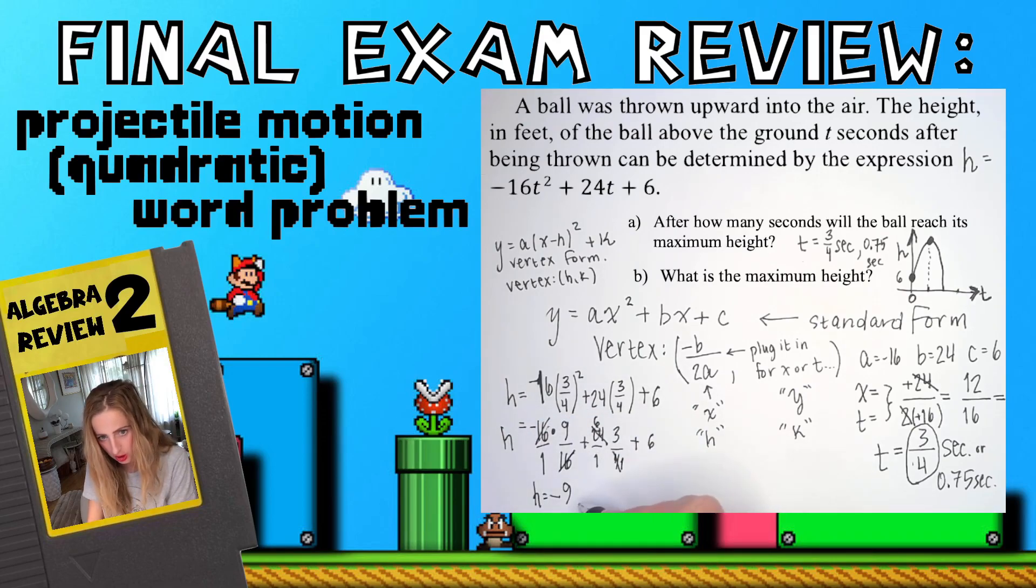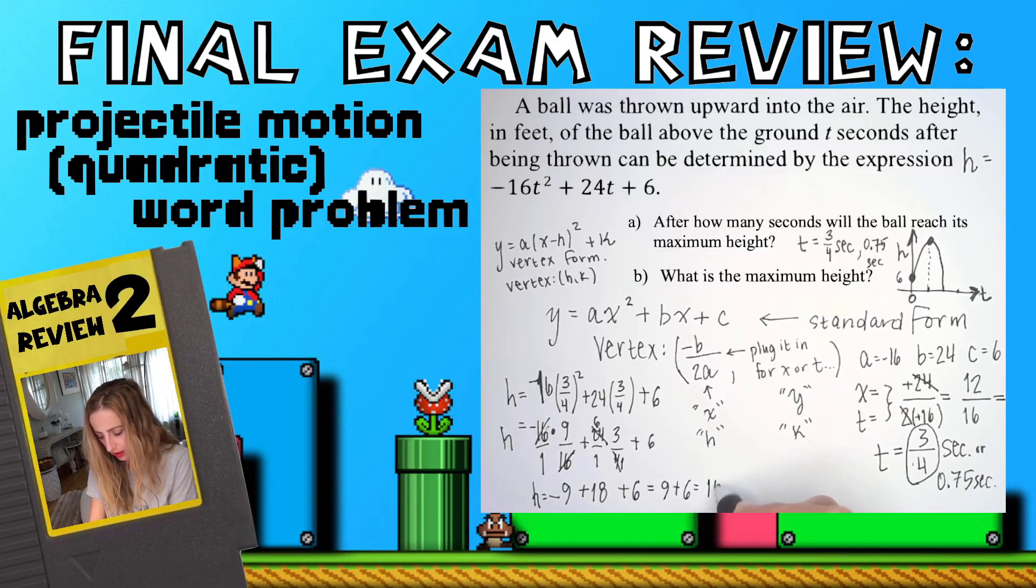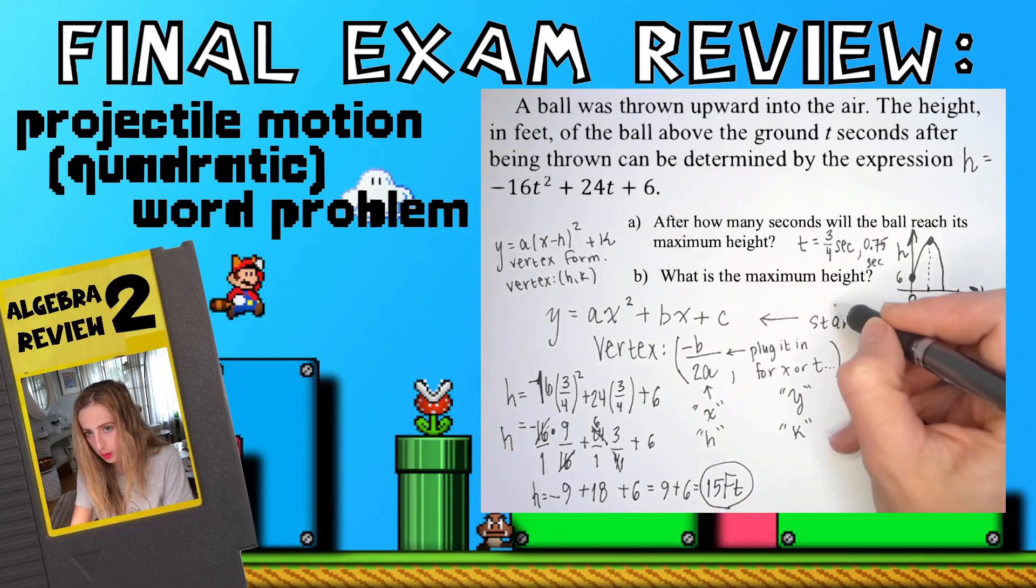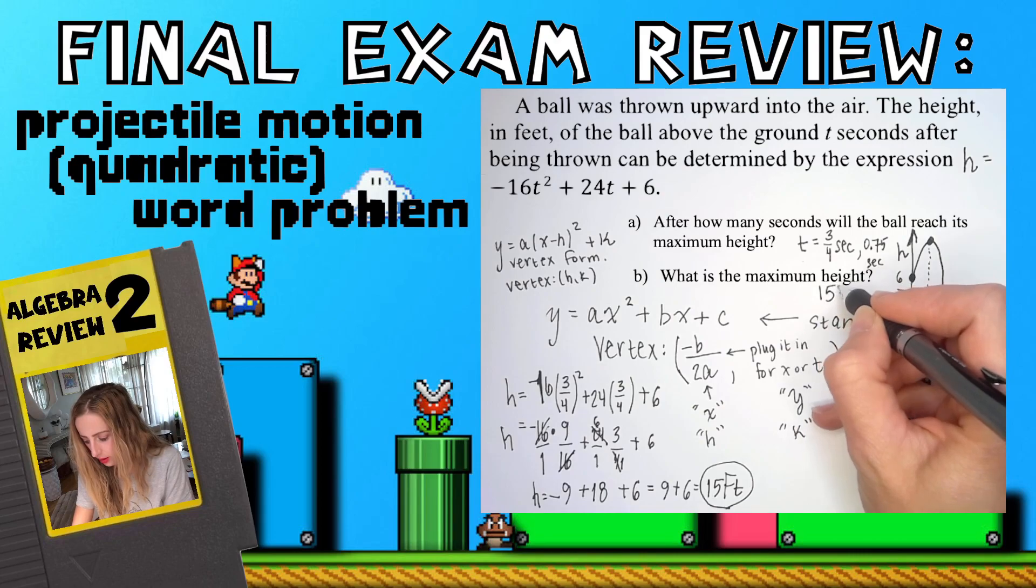So h equals negative 9 plus 6 times 3 is 18. Negative 9 plus 18 is 9 plus 6, 6. So 9 plus 6 is 15, and the height is modeled in feet. So 15 feet. There we go, and that's it, you're done. So what is the maximum height? 15 feet.